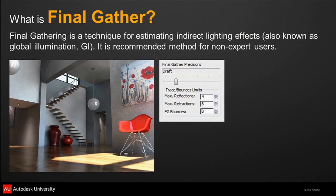Final gathering is a technique to estimate indirect illumination, also known as global illumination. You can also calculate global illumination with photons, which is more complicated than final gathering. Final gathering is the method recommended for AEC users — it's easier to manage and gives nice, accurate results. We're not going to talk about the photon GI method.